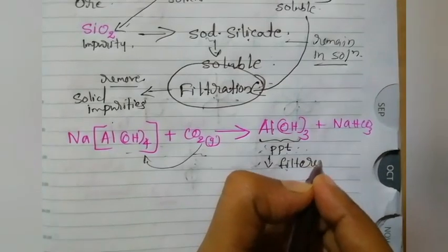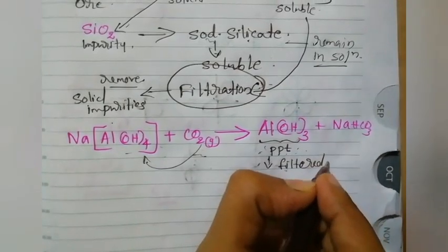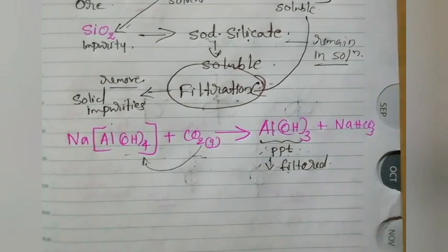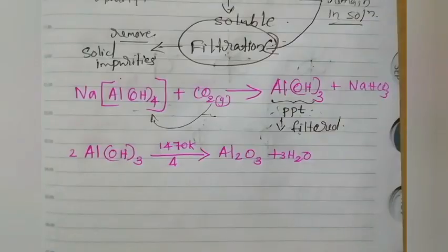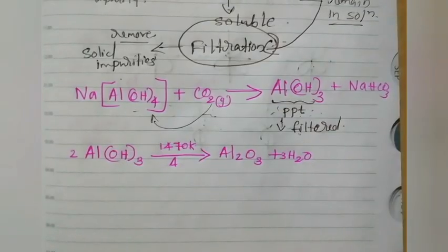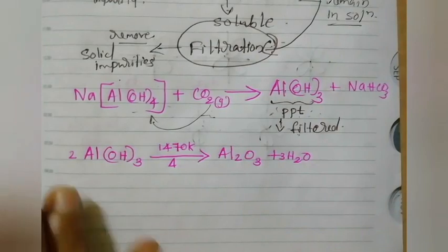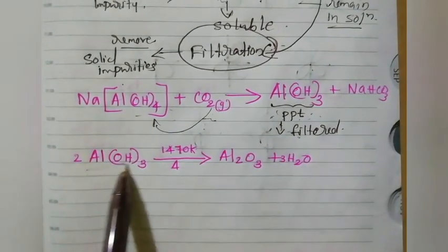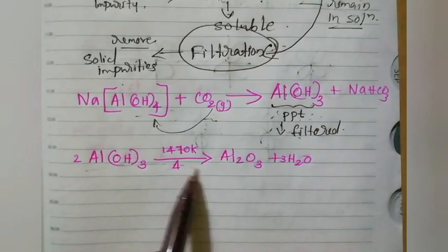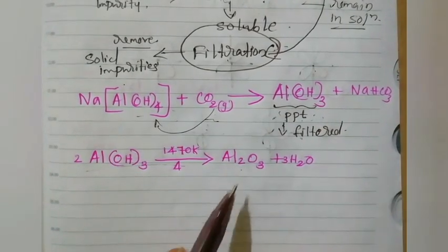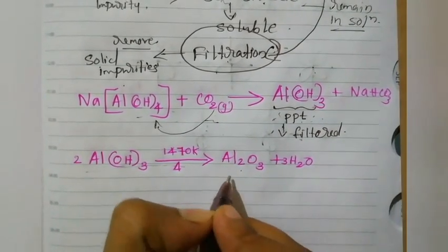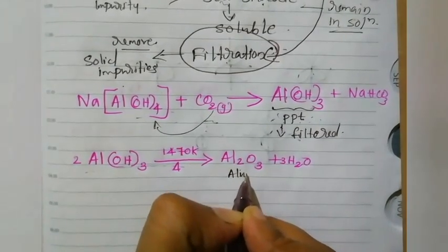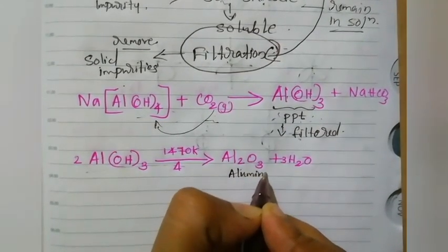This aluminum hydroxide can be separated by filtration. The aluminum hydroxide precipitate is collected, and on strong heating at 1470 Kelvin, we will get alumina — Al2O3.